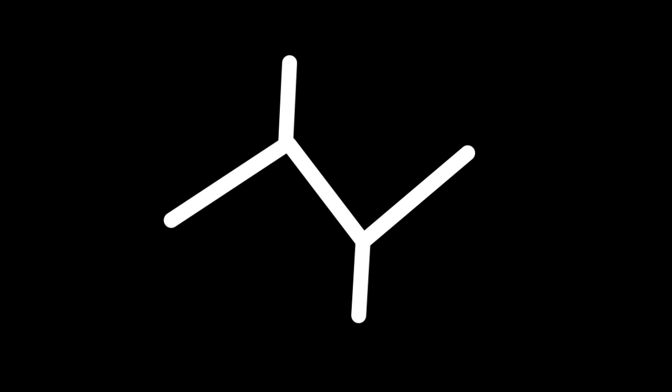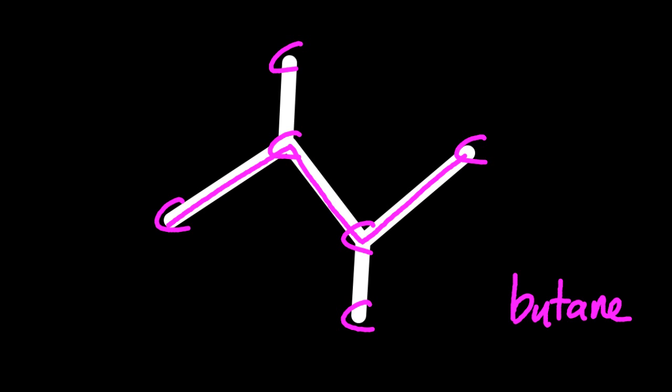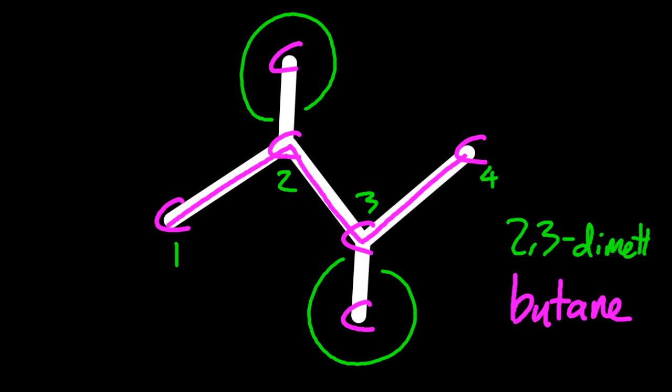So what about this molecule? Again, it might help to actually draw in the carbons. And you can see that that is a butane is the longest chain. And on the second and the third carbons, there's a methyl group. So two, three dimethyl butane.